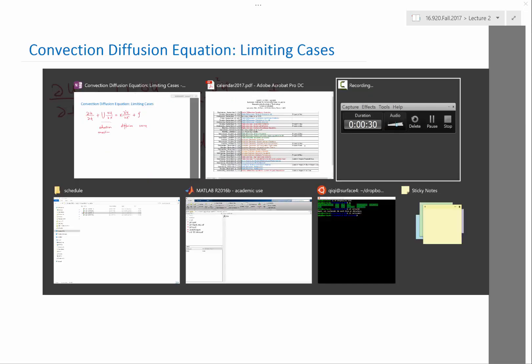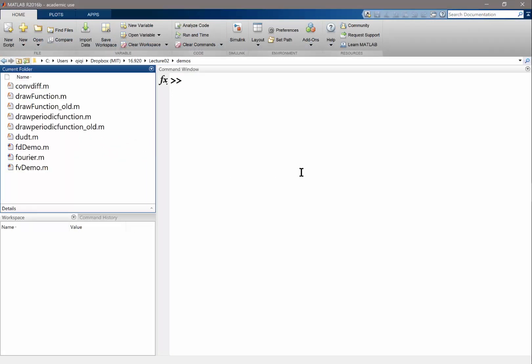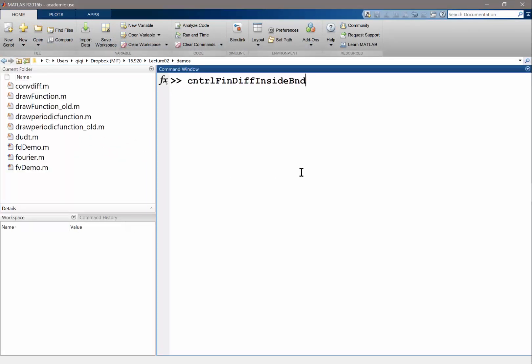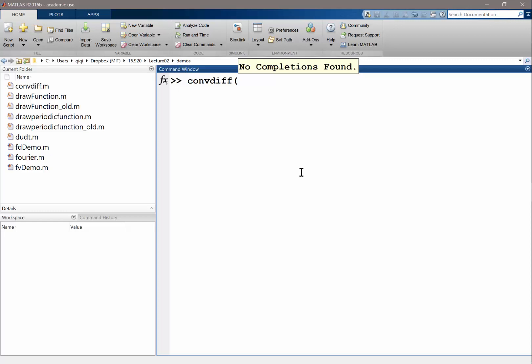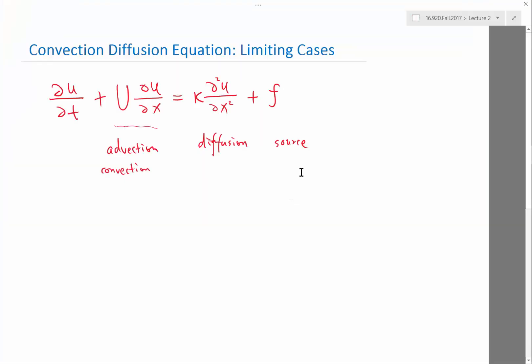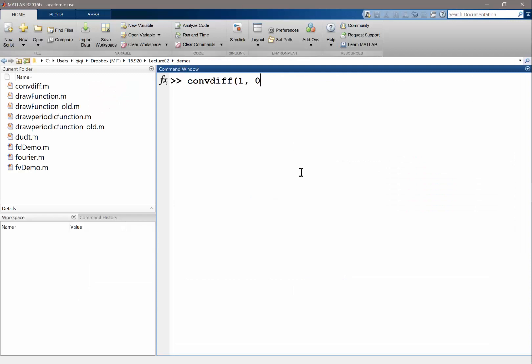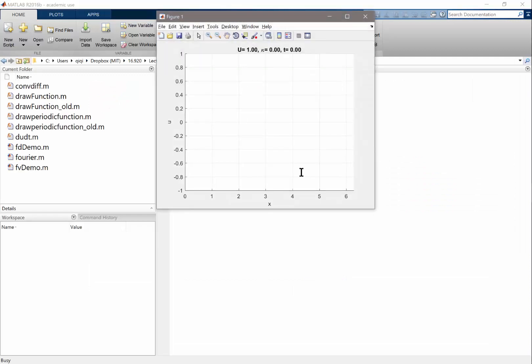Going back to MATLAB - this function lets us set U and kappa. For example, if I only let the advection term work, with no kappa, kappa equal to zero, what do I have? If I draw a solution like that, the solution just keeps moving towards the right. There is no diffusion happening, no flattening of the solution.